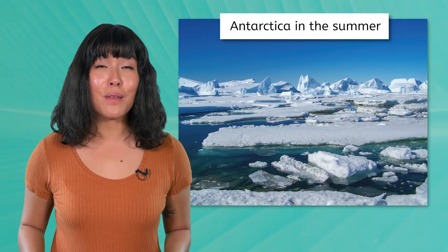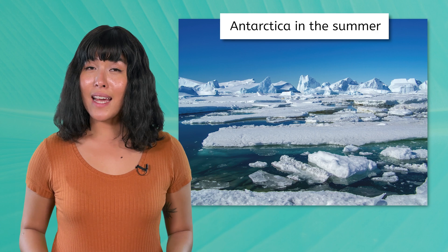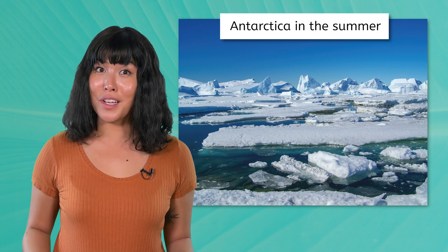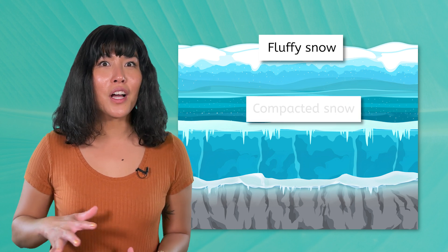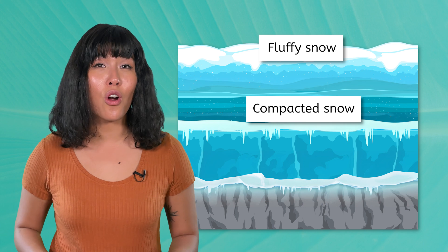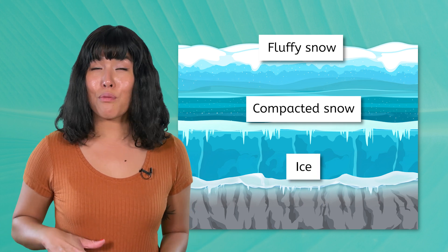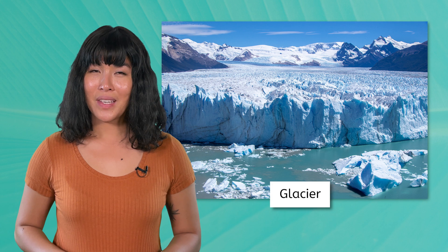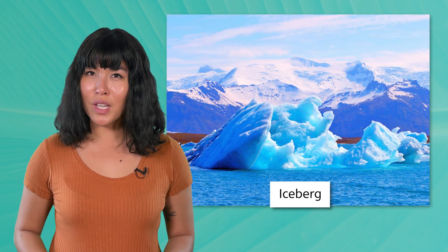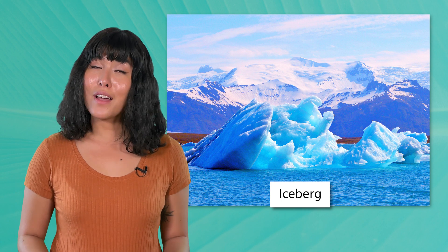Does it ever snow where you live? If it does, there's a good chance that most or all of the snow melts in the summer. But not at the poles. This snow doesn't fully melt even in the warmest months. Instead, it just accumulates year after year. Over time, the weight of the accumulating snow compresses the layers beneath, turning fluffy snow into compacted snow, and finally into hard ice. As more snow piles up, the pressure increases, causing the ice to spread outward, flowing slowly over land as a glacier. In Antarctica, these glaciers move toward the ocean, where they sometimes break off to form icebergs.